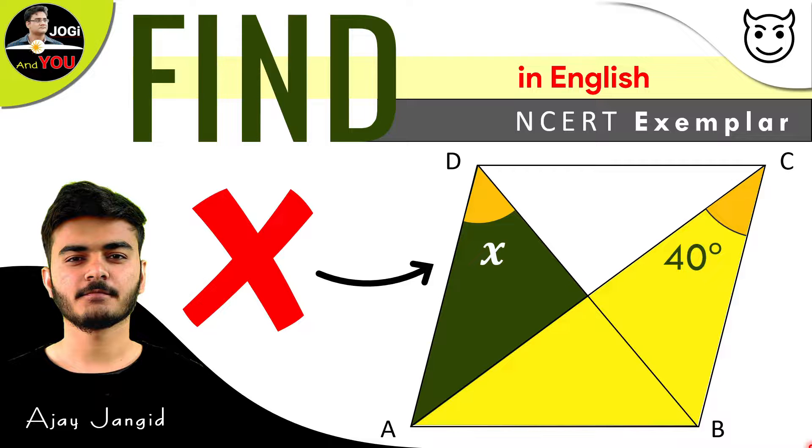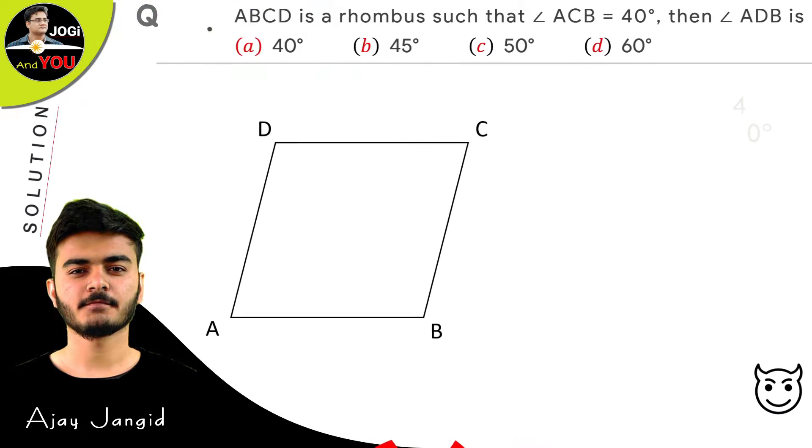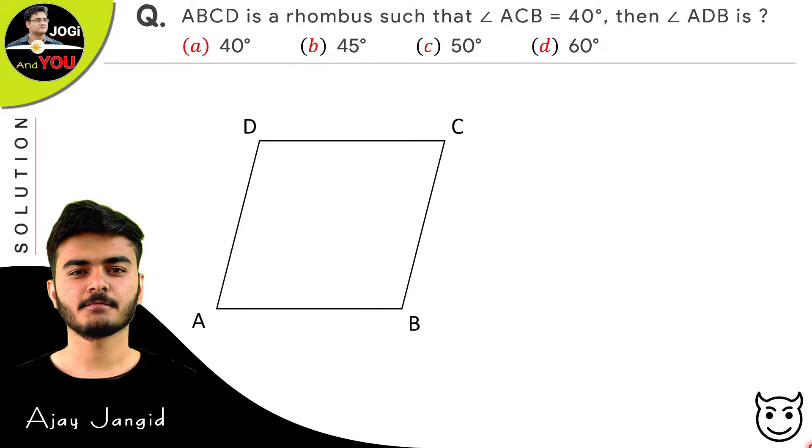So for solving this, just set aside all the things here. Your question is: ABCD is a rhombus such that angle ACB is equal to 40 degrees. Then what is angle ADB? The options are 40 degrees, 45 degrees, 50 degrees, or 60 degrees.